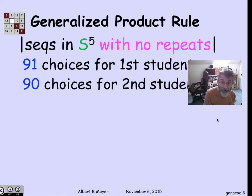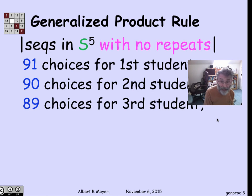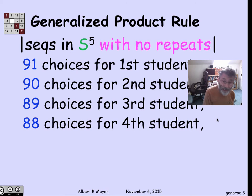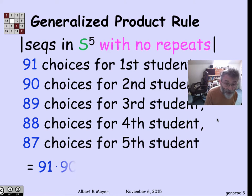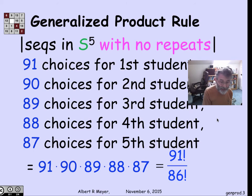88 for the fourth, 87 for the fifth. The basic answer is 91 times 90 times 89 times 88 times 87.